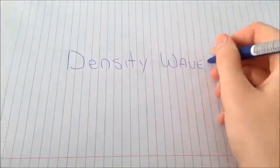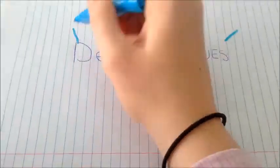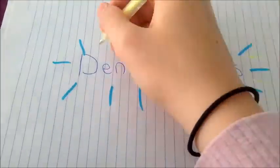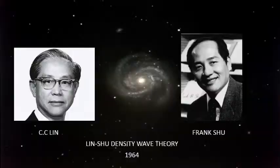There are many contrasting theories as to what causes the arms in spiral galaxies. The density wave theory, developed by C.C. Lin and Frank Xu, is particularly good at explaining the formation of grand design spirals.